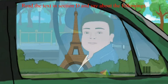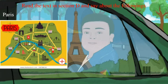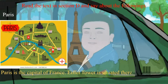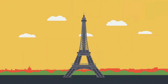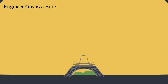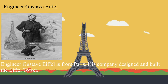Now read the text in section D and say about the followings. The first one is Paris — here we have a map of Paris. Paris is the capital of France, and the Eiffel Tower is located there. Engineer Gustave Eiffel is from Paris. His company designed and built the Eiffel Tower.